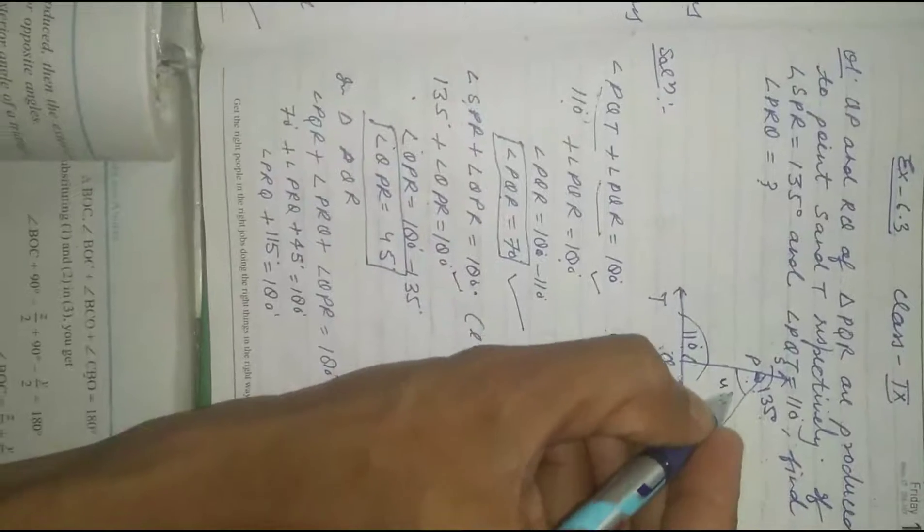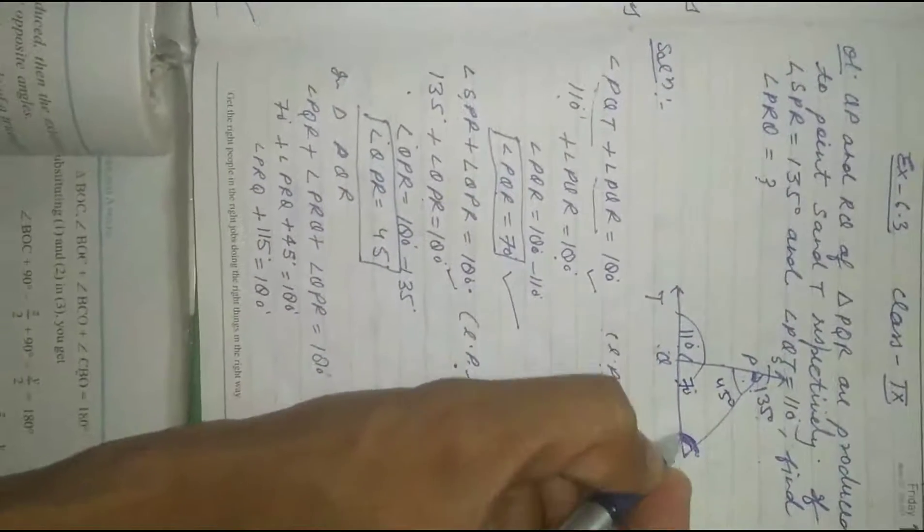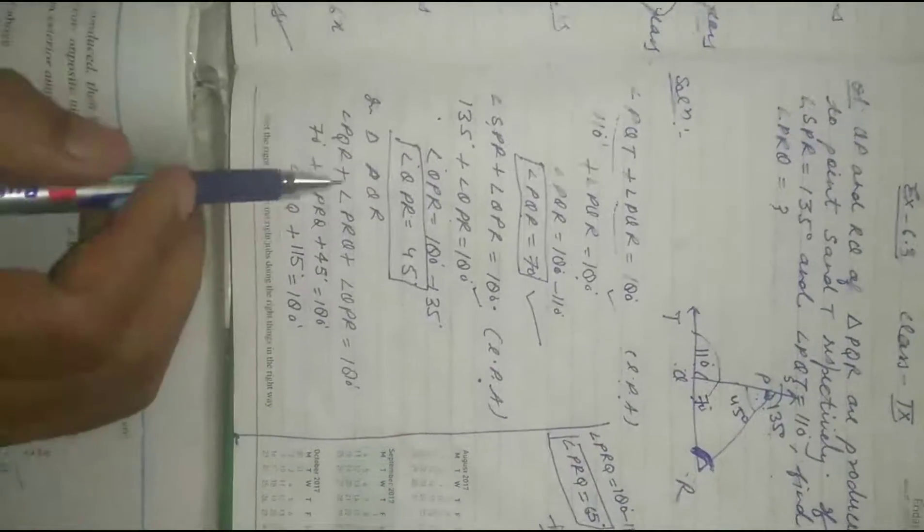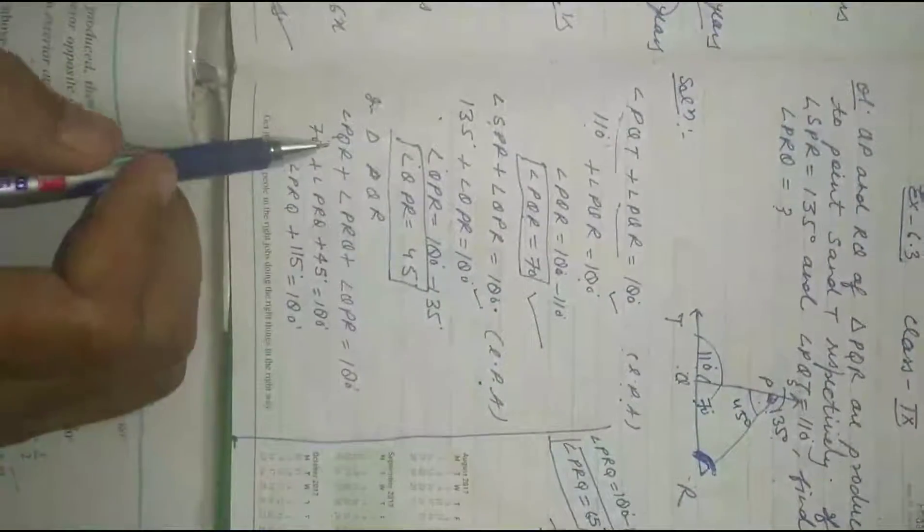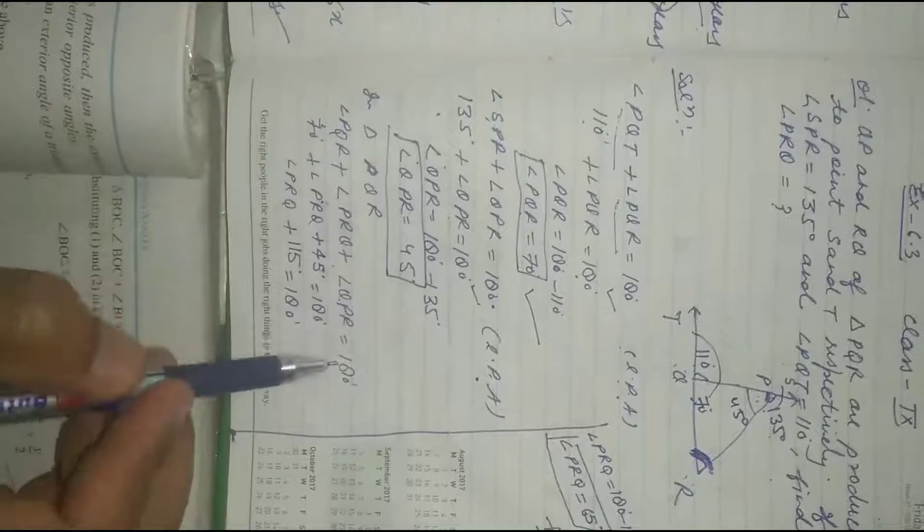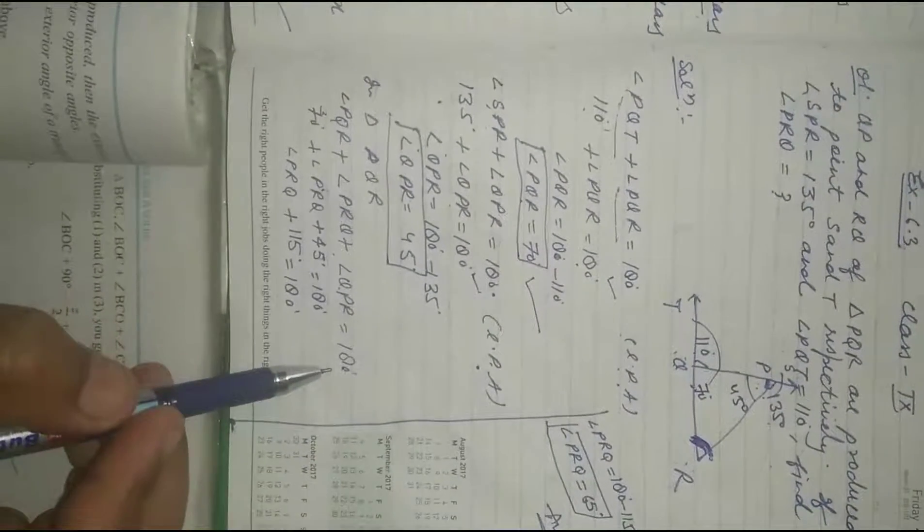This angle we found is 45 degrees and this angle we found is 70 degrees. Now find angle PRQ. In triangle PQR, angle PQR plus angle PRQ plus angle QPR equals 180 degrees, as the sum of all angles of a triangle is 180 degrees.